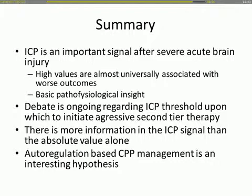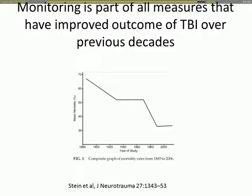In summary: ICP is an important signal, and high values are associated with worse outcome. The central question is which threshold to use to initiate aggressive second-tier therapy — therapies we know may damage the patient if applied to the wrong patients. There is more information in the ICP signal: auto-regulation data, amplitude information. Auto-regulation-based CPP management is an interesting hypothesis for the future, but is certainly not yet an established practice.